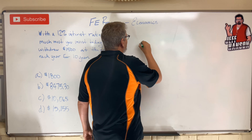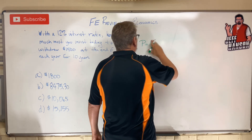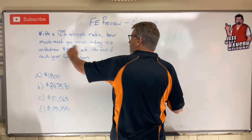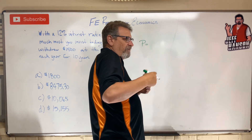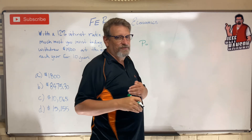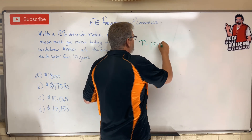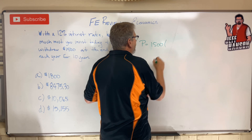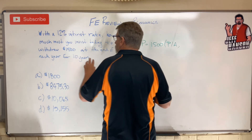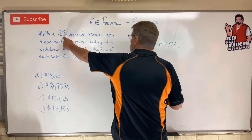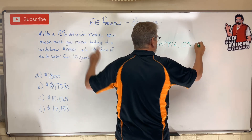So P is equal to... $1,500 at the end of every year — same amount of payment year after year. That sounds like annuity. So $1,500 times P given A for — what was the interest rate? 12% for 10 years.